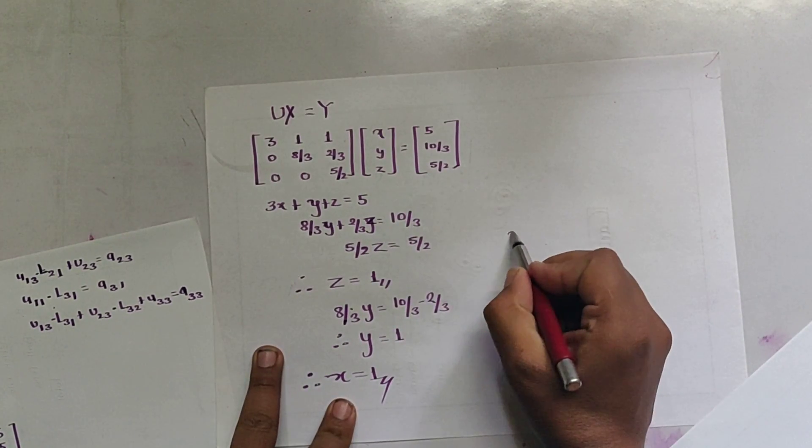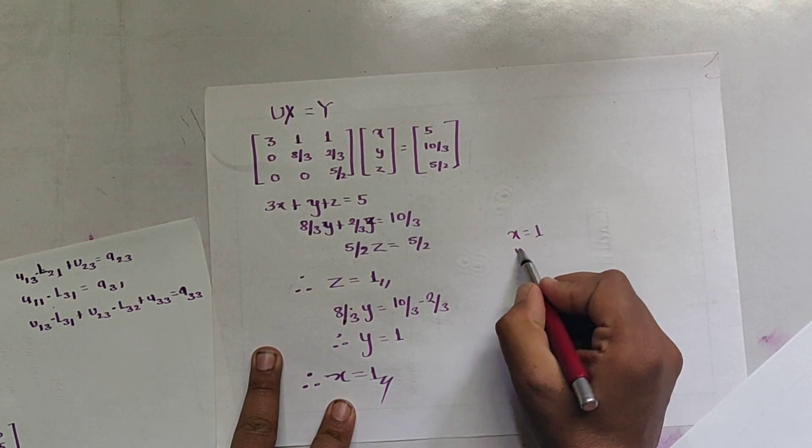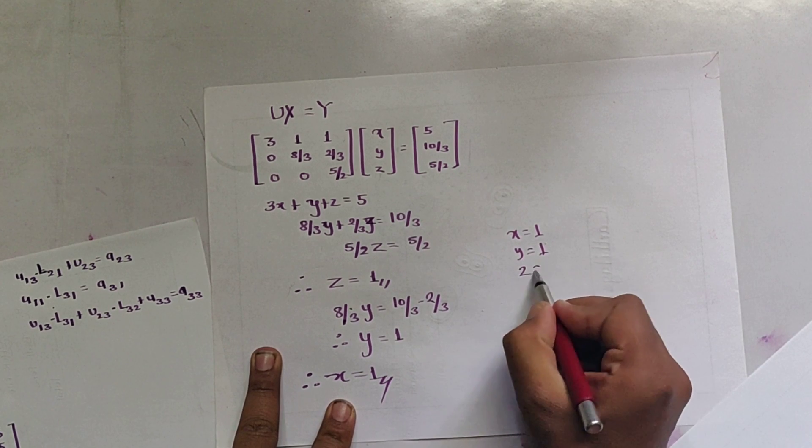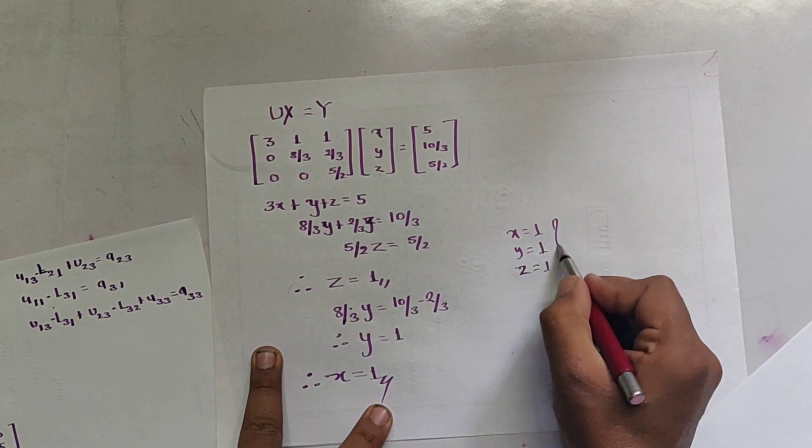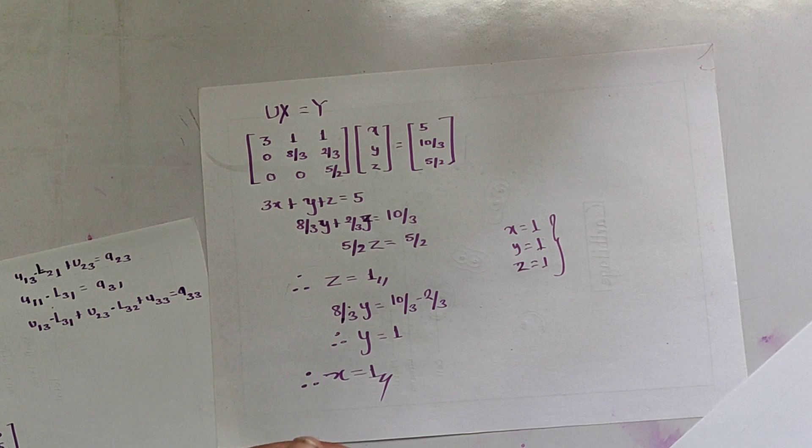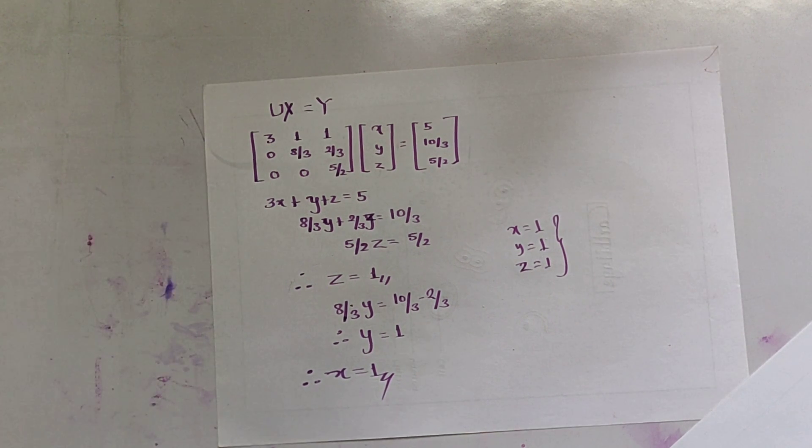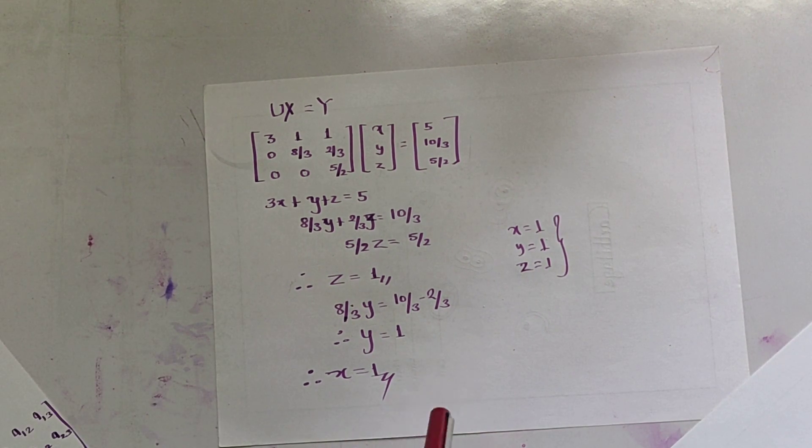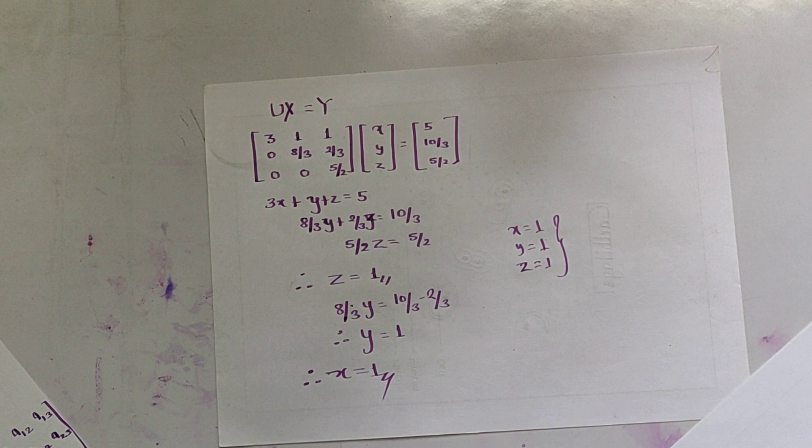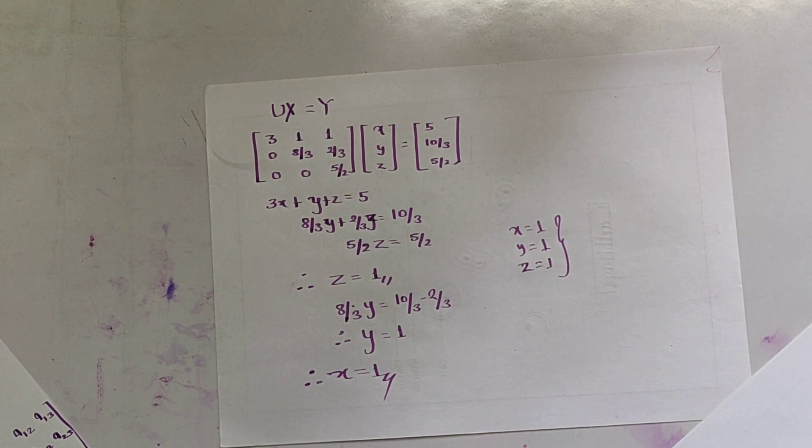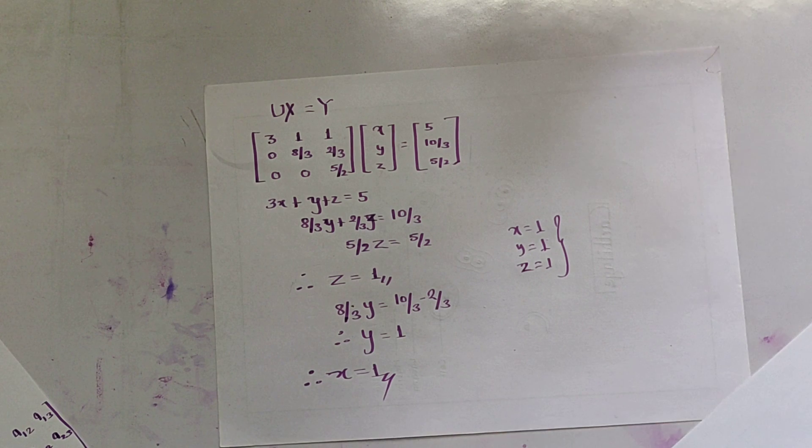We know that X = 1, Y = 1, and Z = 1 is the required solution. In this way, we have solved the linear equation by using Doolittle method or LU decomposition or LU factorization method. Thank you and bye-bye.